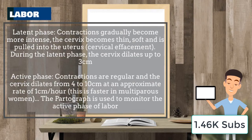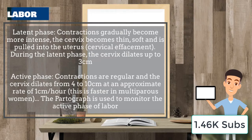During the latent phase, contractions gradually become more intense. The cervix becomes thin, soft, and is pulled into the uterus — this is referred to as cervical effacement. During the latent phase, the cervix dilates up to three centimeters.